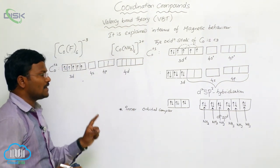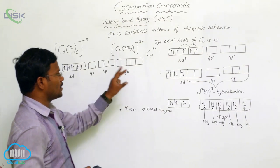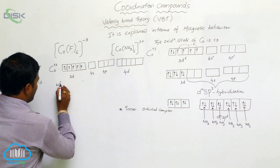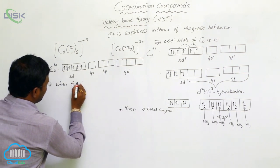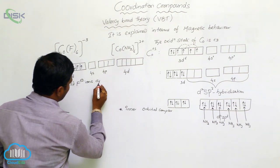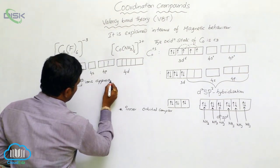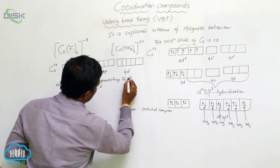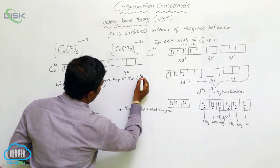4d orbital as well as 4f orbital present, but not in our discussion, only up to 4d orbital. Here, when 6 fluoride ions approaching to the cobalt, cobalt plus 3 ion, there is no rearrangement of these two electrons into the inner sphere.